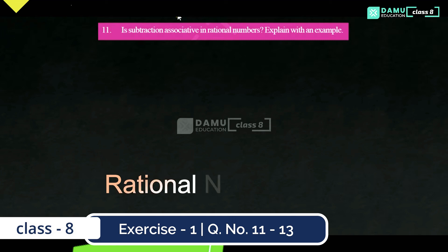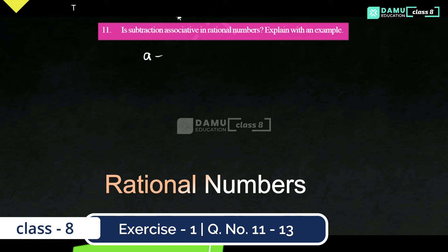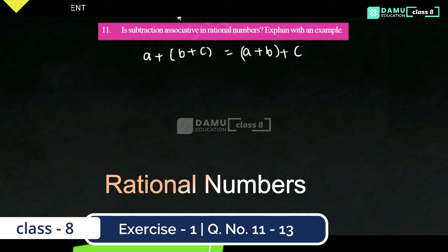In this module, we are going to discuss whether subtraction is associative in rational numbers. I will explain with an example. Associative means we should know the formula: in addition, A plus (B plus C) equals (A plus B) plus C.